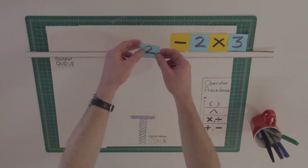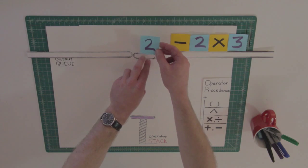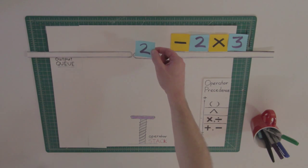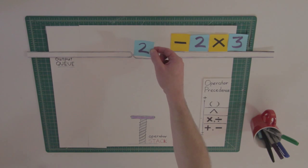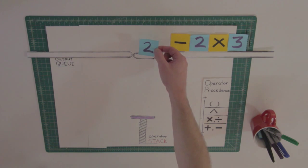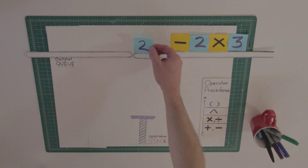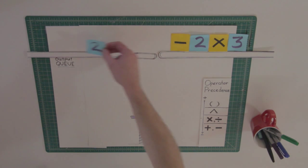Now we check: is the token a number? Yes. If it is, add the token to the output queue.